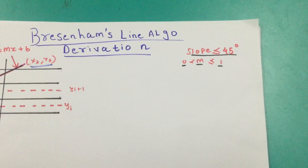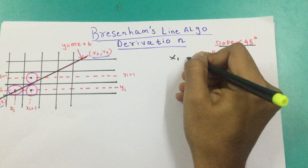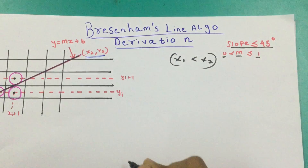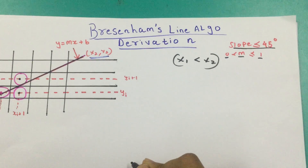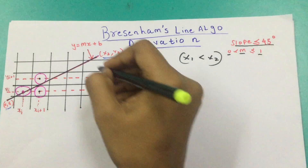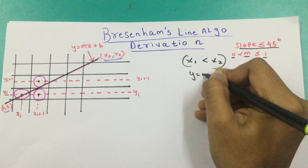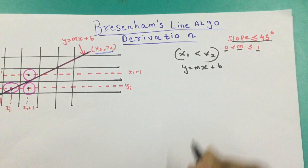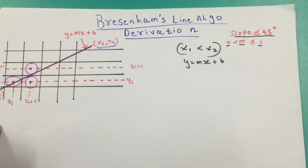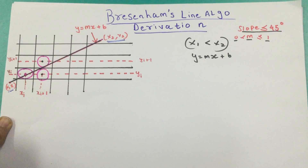Assumption number three, x1 will always be less than x2. And assumption number four is that the equation of the line is y equals mx plus b. So without any further ado, let's get started.